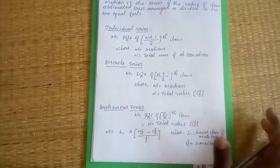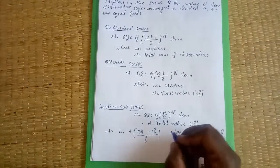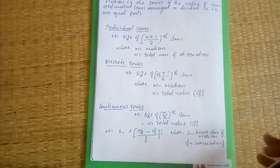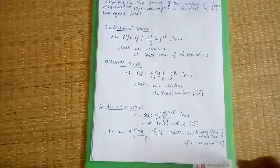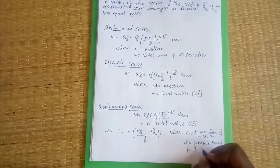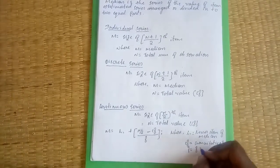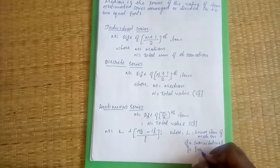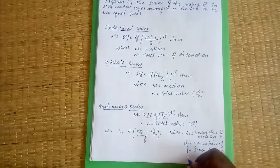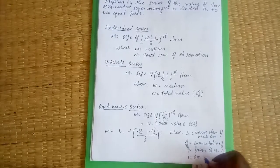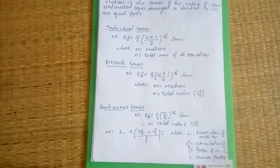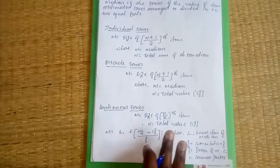Then F equals frequency of median class. And I equals common factor - common factor of class interval.